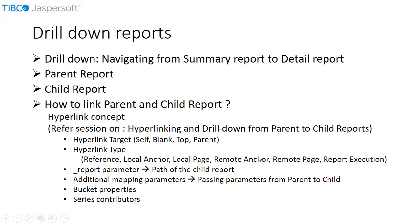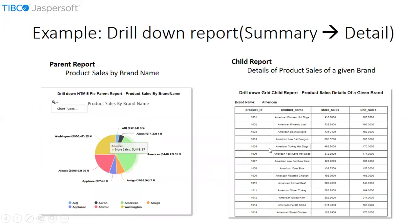Now let us move on to the example on how we can actually drill down from HTML5 charts. We are going to consider the scenario of product data. In the demonstration we are going to create two reports: one parent report and one child report. On the parent report we are going to display product sales by brand name, and on the child report we are going to display the product sales of a given brand in the form of a grid — a detailed representation of the product sales.